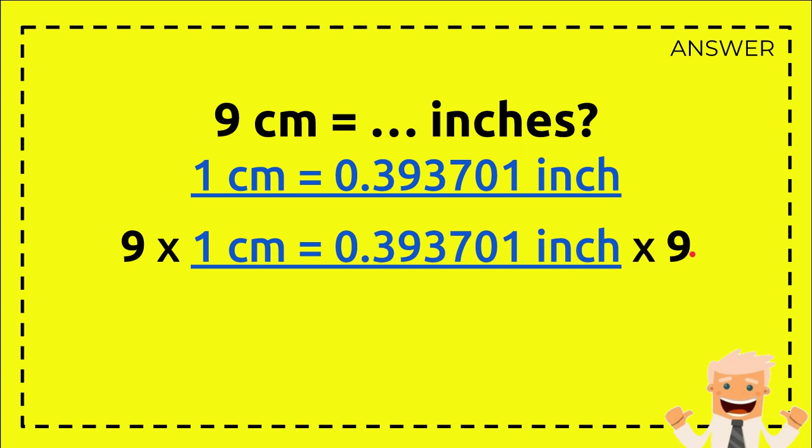The reason why I did that is because the only number we have from the question is 9. If you want to make an equation for 9 centimeters equals how many inches, then you need to put 9 here and 9 here. You multiply it with centimeters, and because you have 9 here, you need to multiply it as well with inches.